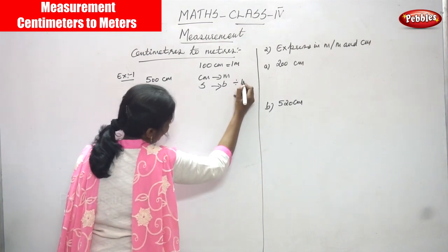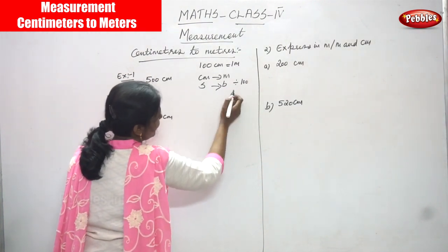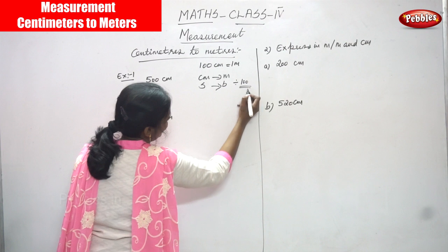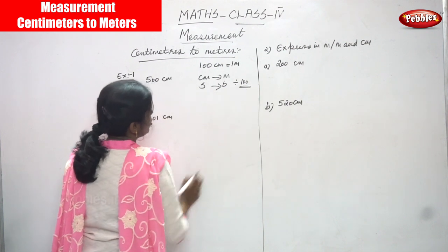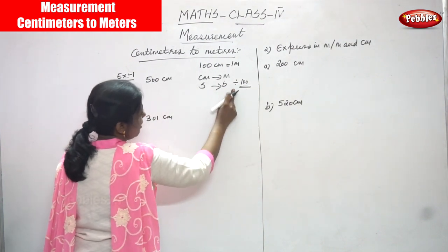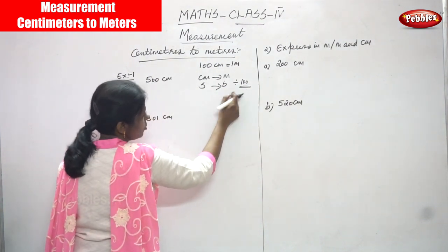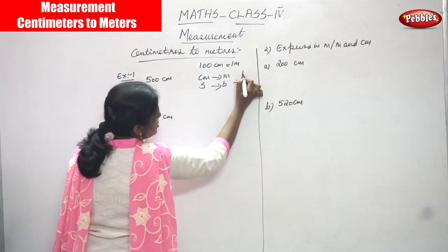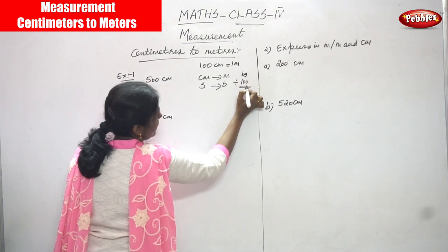Division by what? 100. Division by 100. So smaller to bigger unit means you have to divide by 100.